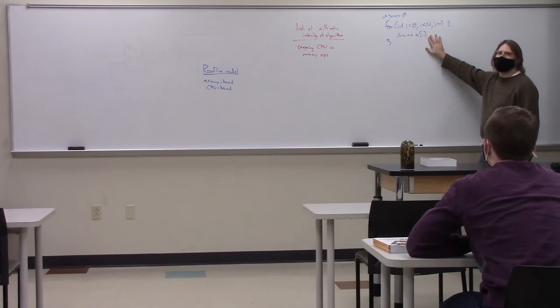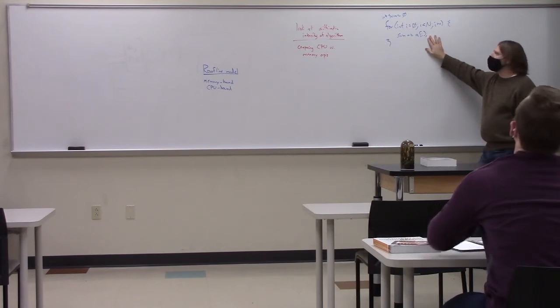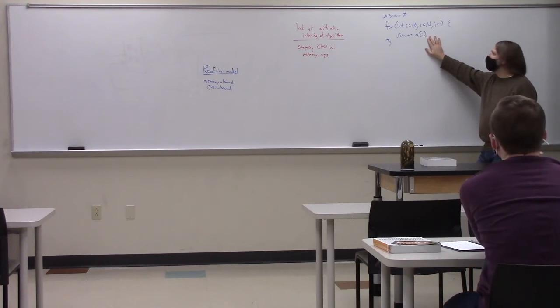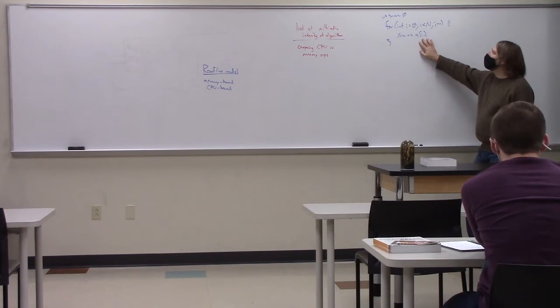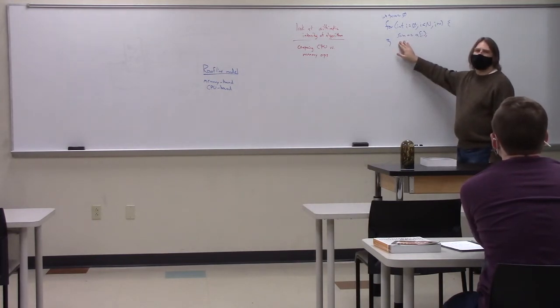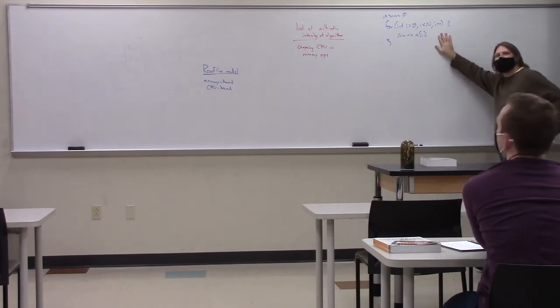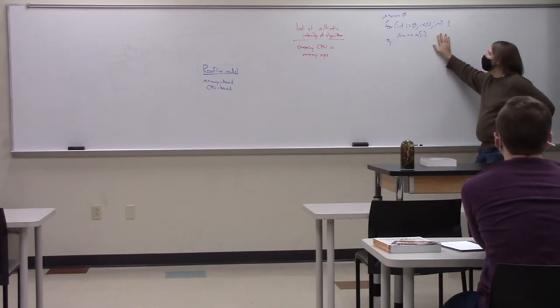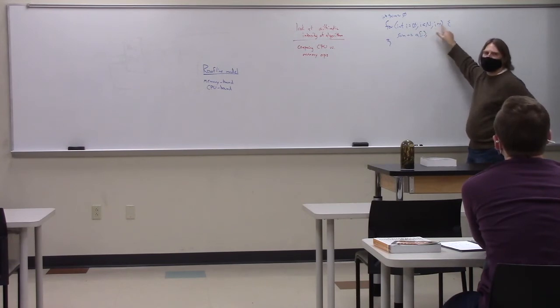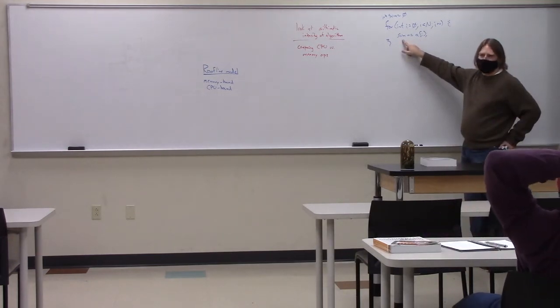In this example right here, for each iteration of the loop, how many memory operations are we doing? Three. Three. Three. What three? You have to access the value of i. Okay. You have to access a of i, and then you have to access sum, and then access i again. Okay. Okay. You have to access 10 to check it. Okay. Yeah. So it would be mine. It's probably... You are correct in saying that we have to access these variables. We have to compare i and n. We have to increment i. We have to access a sub i. We have to read sum, and then we have to write the sum.